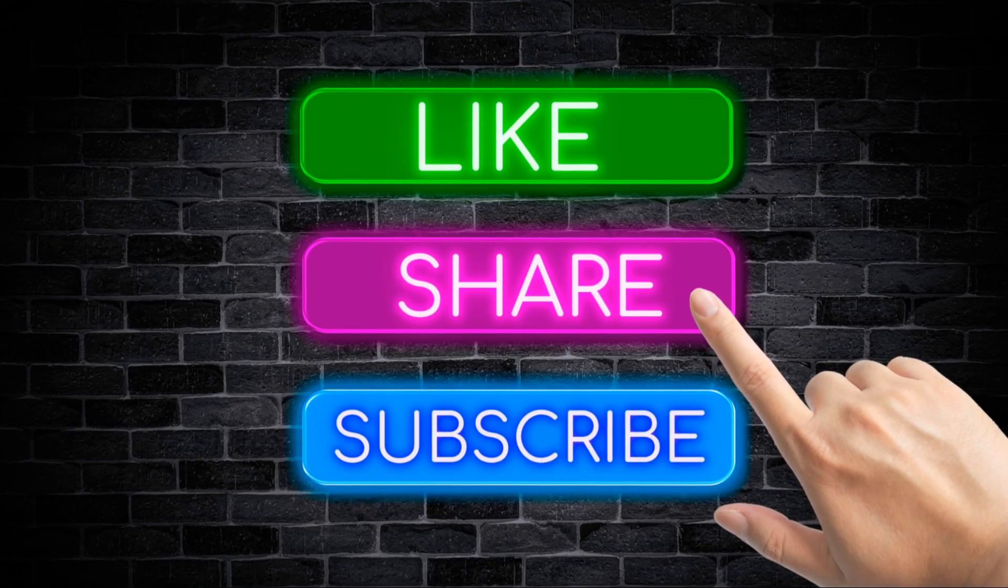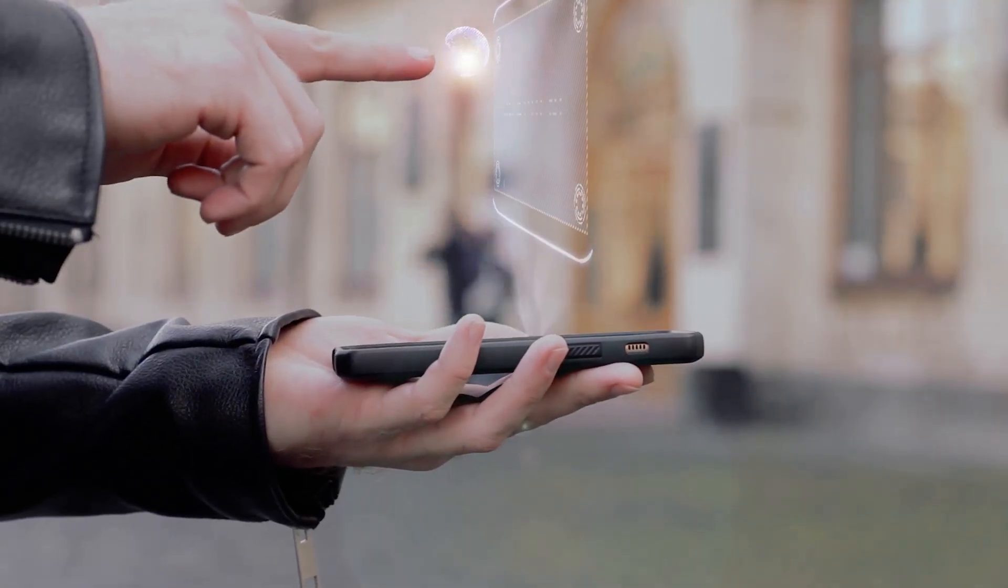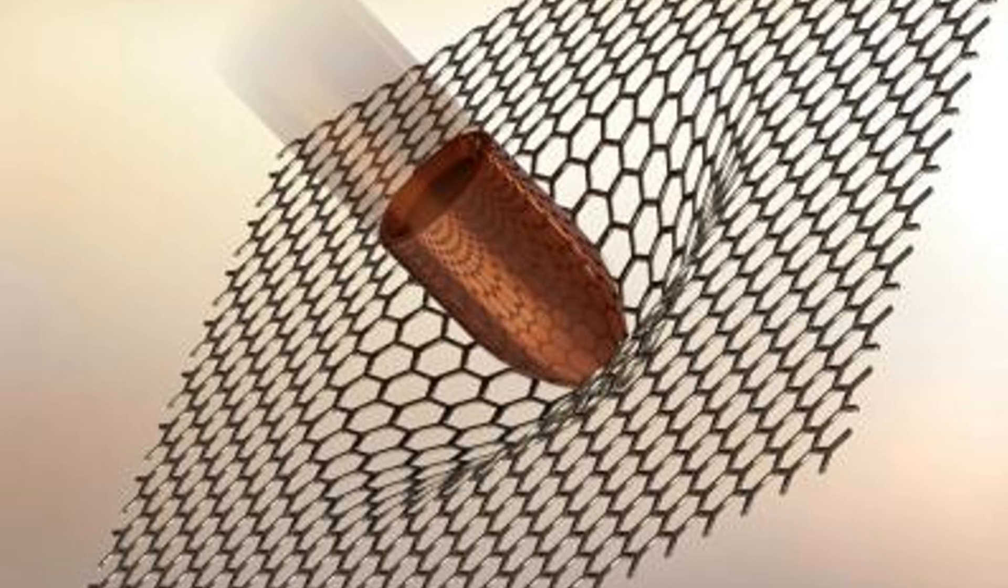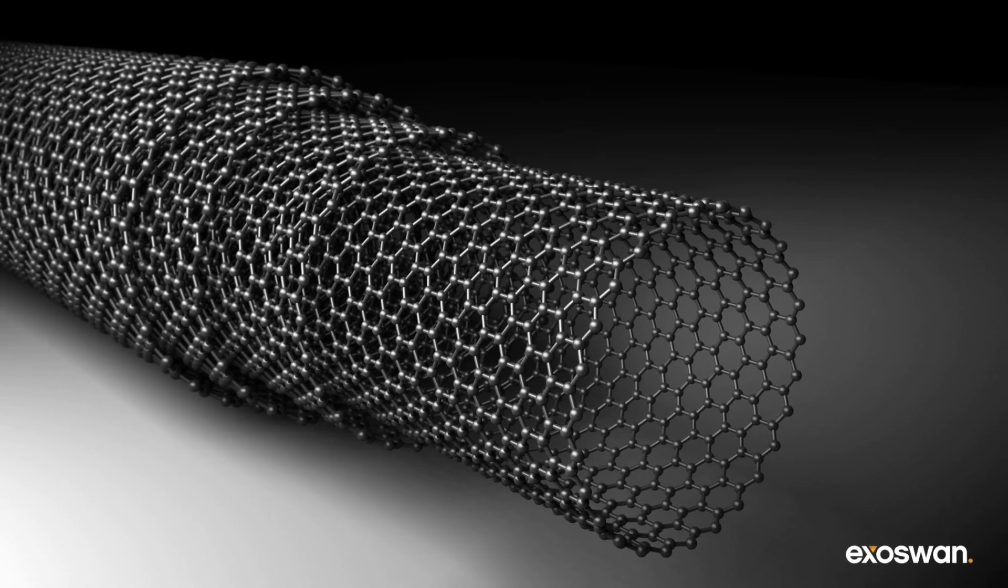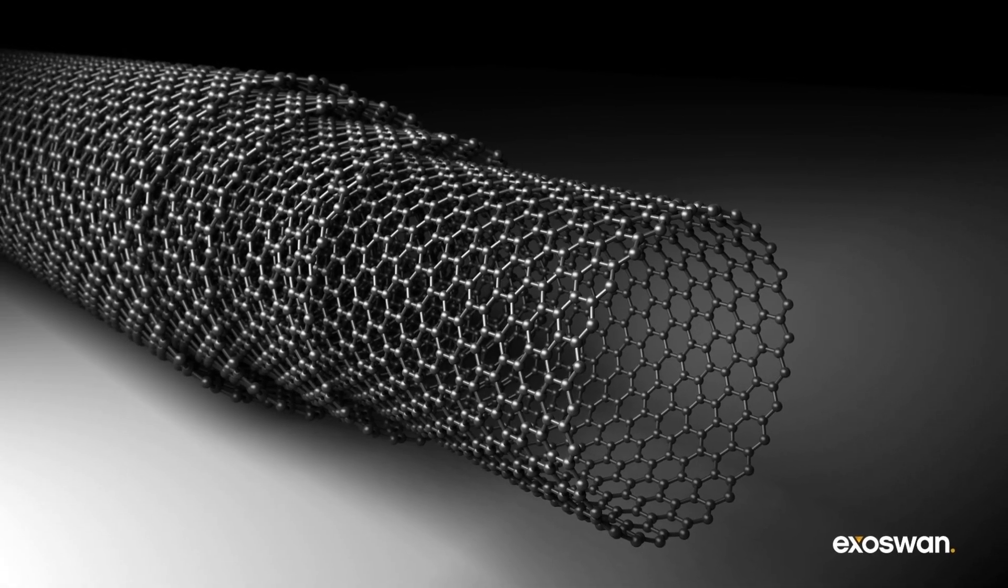Section 5: Graphene in action, transforming industries. The unique properties of graphene make it a game-changer in numerous fields. This wonder material, composed of a single layer of carbon atoms arranged in a hexagonal lattice, is incredibly strong, yet lightweight. Its versatility is opening up new possibilities in technology and industry.